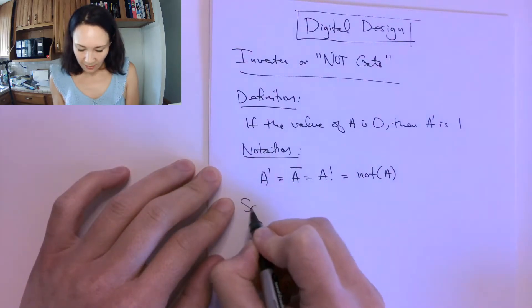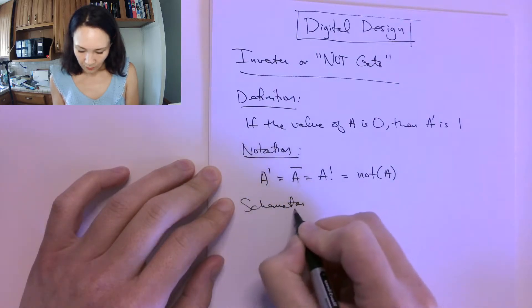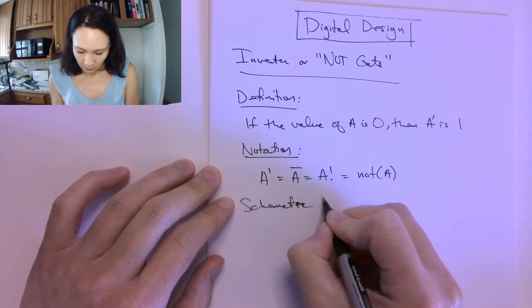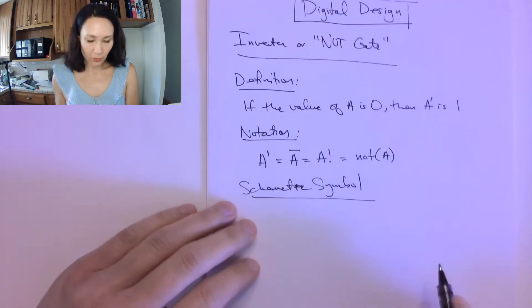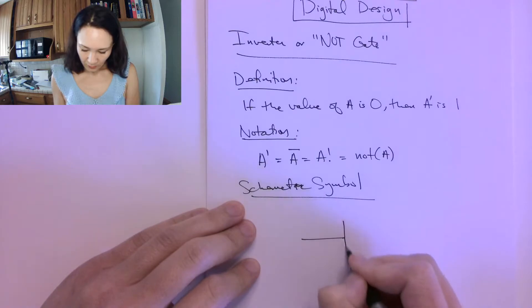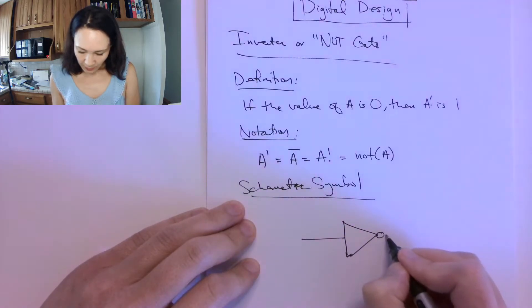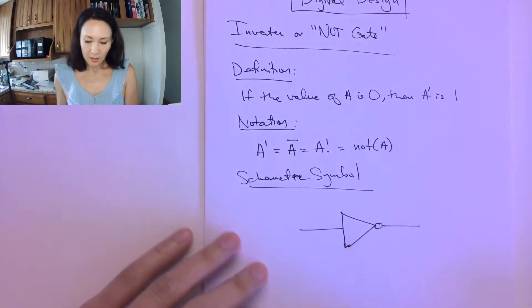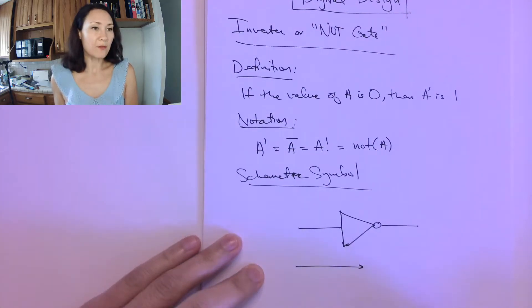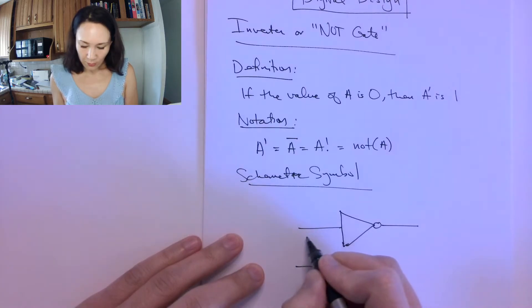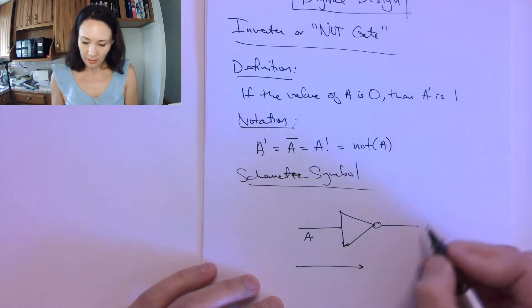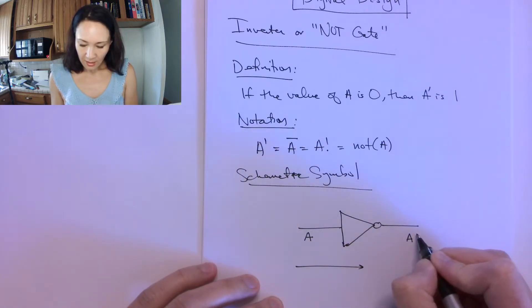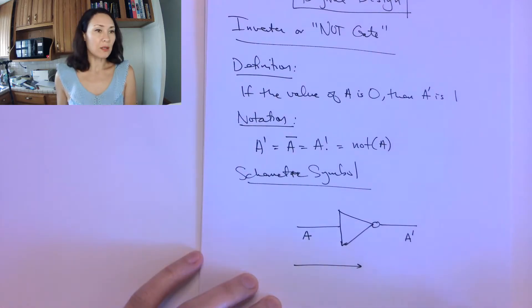The schematic symbol for the inverter looks like this. It's a triangle, and then there's this little bubble on the end. Okay, so if you imagine, as we read this from left to right, if we have some input come here into the left side of the gate, then the output that comes back is that input negated.